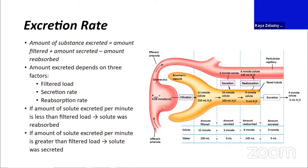Here we have examples from the bottom of the diagram. For one solute, we have 0.08 millimoles per milliliter going through the glomerulus. Multiplying by our GFR gives us 12 millimoles of solute ending up in the nephron—that's our filtered load. The amount ultimately excreted is only 9 millimoles, so we know on net we must have had reabsorption because we're missing 3 millimoles. Overall, we had more reabsorption happening. In this example, we did have some secretion, but not as much as the reabsorption.